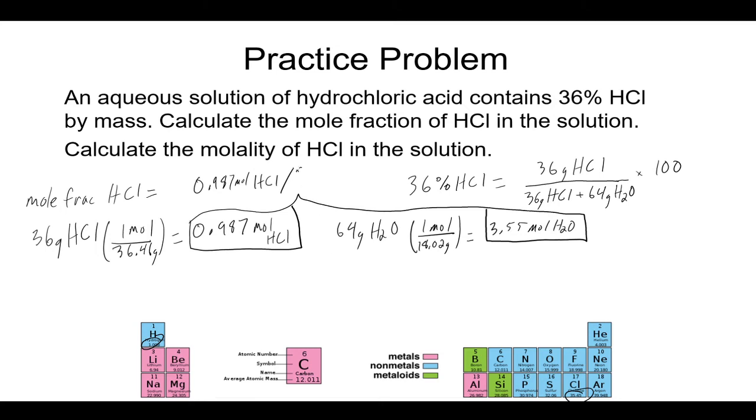And now, I have everything I need to solve the problem. The moles of HCl and the moles total. The moles of HCl is 0.987. And the total moles is this HCl plus the moles of water. So, this is 0.987 plus 3.55. 0.987 divided by 0.987 plus 3.55. That should give you a final answer here. That should give you a final answer of 0.22. So, that is our final answer for part A here, the mole fraction of HCl.